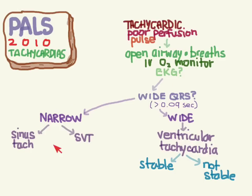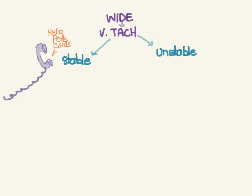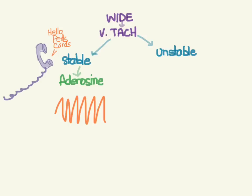Moving to the wide QRS branch — ventricular tachycardia. VTach can be stable or unstable; unstable means they're in shock, have low blood pressure, or altered mental status. For stable patients, it may be worth calling pediatric cardiology to help navigate the drugs due to their side effects. The first drug you can use is adenosine — the same quick-acting drug discussed for SVT. It can help slow the rhythm to clarify whether it's truly VTach, and may even convert the patient to sinus rhythm.